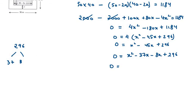Plus 296. 0 equal, now we need to take common from the first two terms, it will be x, x minus 37. Minus 8 can be taken out from the last term, x minus 37.